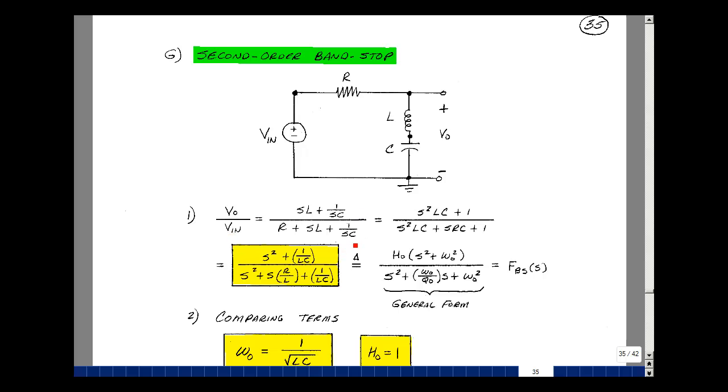Let's multiply the numerator and denominator by SC, so I then get S squared LC plus 1. I get an SRC term, an S squared LC term, and then a 1. Let's further divide the numerator and denominator by LC. Pull that out. Likewise here, it'll cancel. The numerator then is S squared plus 1 over LC. The denominator is S squared, and then SRC divided by LC. The C's cancel, and I get R over L, and then for the 1 and dividing by LC.